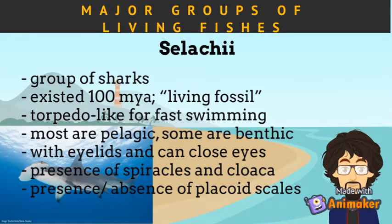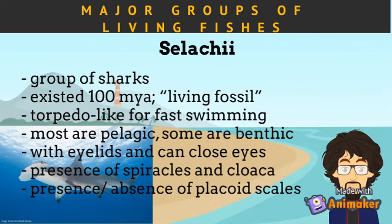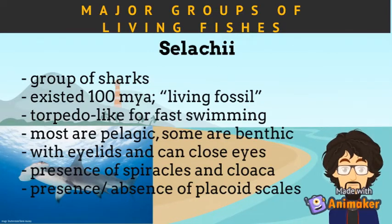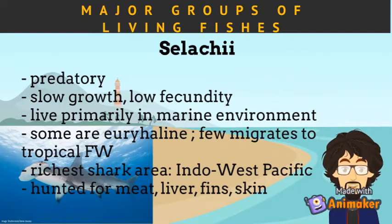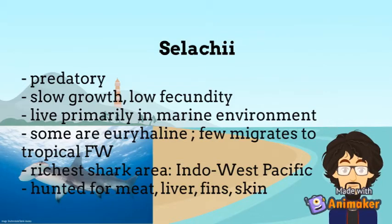Under subclass Selachii are the sharks. This group existed 100 million years ago and has not changed much, which is why they are known as the living fossil. They have a torpedo body shape for fast swimming. Most species are pelagic, but some are benthic. They have eyelids and can close their eyes. They have placoid scales, a powerful heterocercal caudal fin, two dorsal fins, and paired pectoral fins. There are five to seven gill slits on each side, and their teeth are constantly replaced by new ones. Selachians are predatory, with slow growth, low fecundity, but high exploitation rate. They live primarily in marine environments, but some are euryhaline and only a few migrate to tropical freshwater. The Indo-West Pacific is the richest shark area. They are hunted for their meat, liver, fins, and skin.